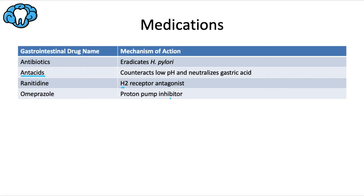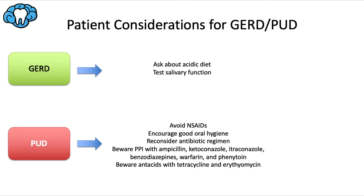Omeprazole is a proton pump inhibitor with a much stronger effect than ranitidine, because it completely blocks influx of protons or acid into the lumen of the stomach. As such, it also has many more drug interactions: it can reduce absorption of ampicillin, ketoconazole, and itraconazole, and can increase concentration of benzodiazepines, warfarin, and phenytoin. Despite these interactions, it is very effective and commonly prescribed for GERD or peptic ulcer disease.